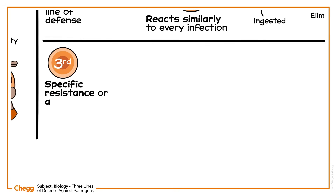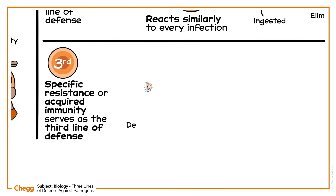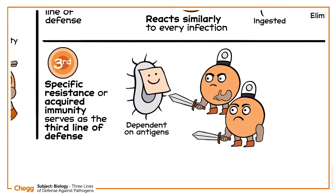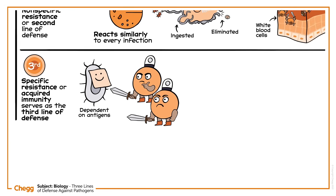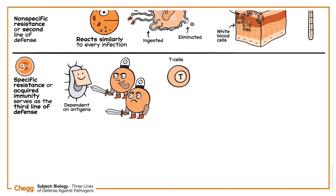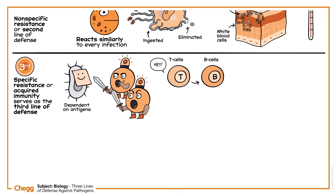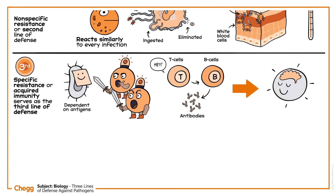Specific resistance, or acquired immunity, serves as the third line of defense. It is dependent on antigens, which are specific substances present in foreign bacteria. The T cells are activated when a macrophage recognizes an antigen. Helper T cells control B cell activation, making sure that antibodies are only mass-produced when necessary. After activation, both B and T cells develop to become memory cells, providing lifelong immunity against a specific disease.